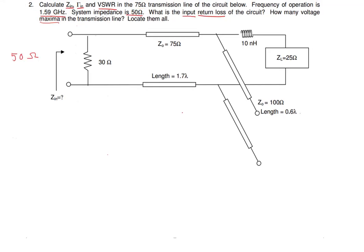To get started we need our Z_in, the impedance seen from the input — that is the sum of all impedances to the right of this line. We start with Z_L, which is 25 ohms, and our Z_inductor is j*omega*L, which comes out as j99.9, which we round off to j100.